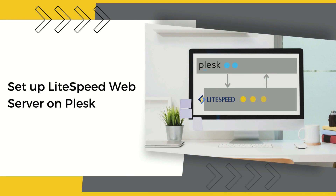In this video we will explain how to install the enterprise version of LiteSpeed web server on the Plesk Obsidian web ops hosting platform. Before we begin, you will need to have a cloud hosted VPS installed and configured with the Plesk control panel and a working copy of Apache HTTP server. You will also need a fully qualified domain name pointing to the Plesk server.